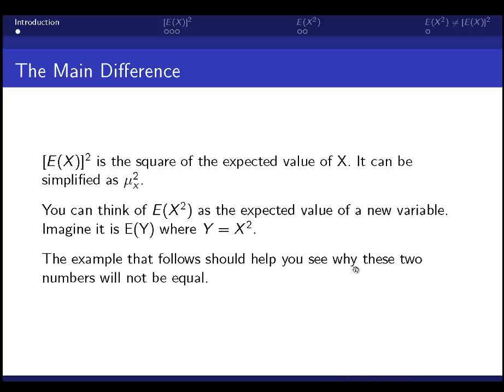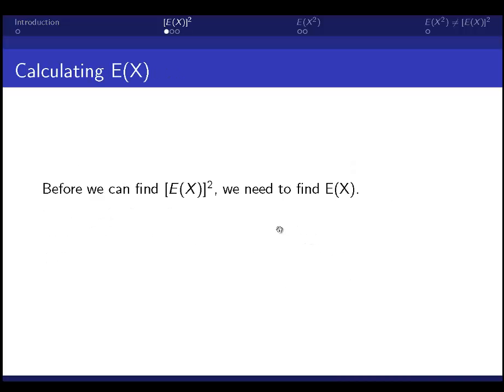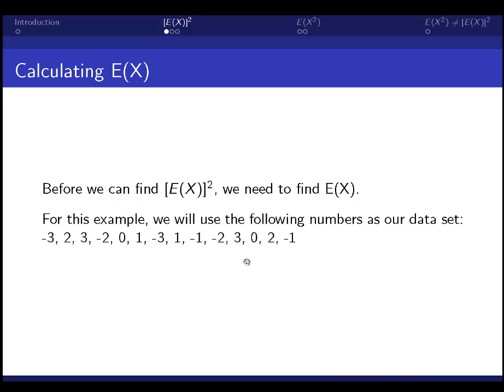Alright, so here's my numerical example. In order to find the square of E of x, we first have to find E of x. Let's use these numbers. If you'll notice, there's two of each number between negative 3 and positive 3.